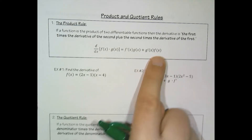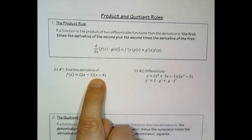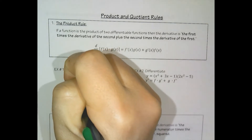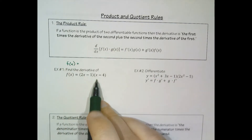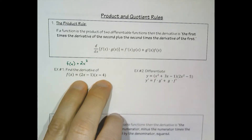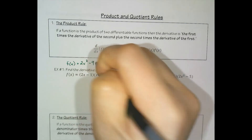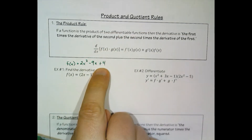In some cases we could actually just go ahead and multiply it out. If we were to multiply this out using FOIL techniques we'd get 2x squared minus 8x minus 1x, so minus 9x plus 4. And this function we can take the derivative of using the power rule.